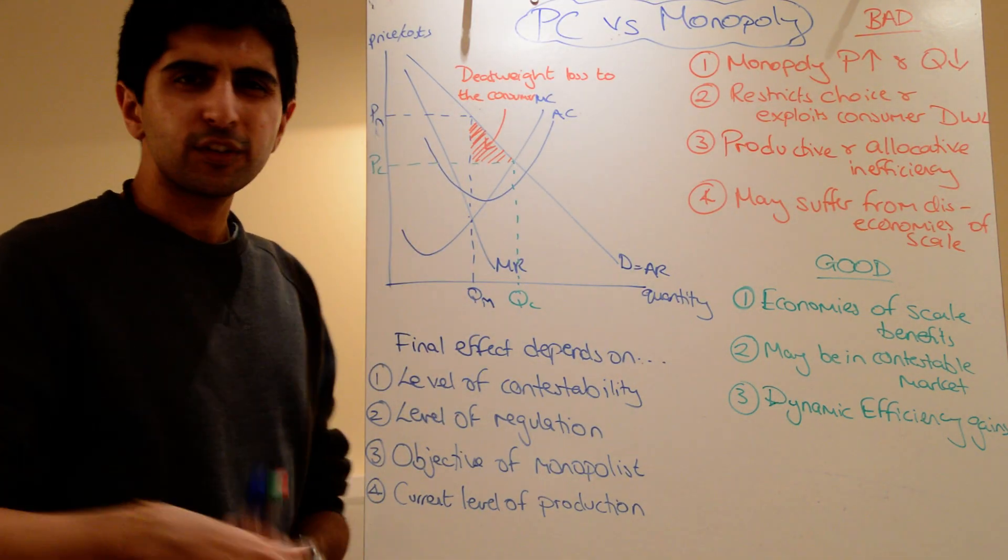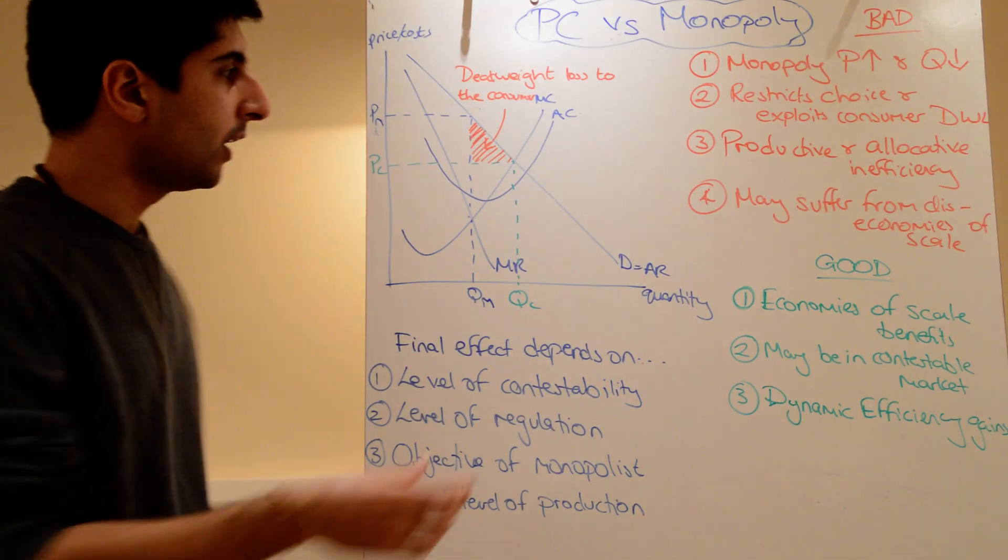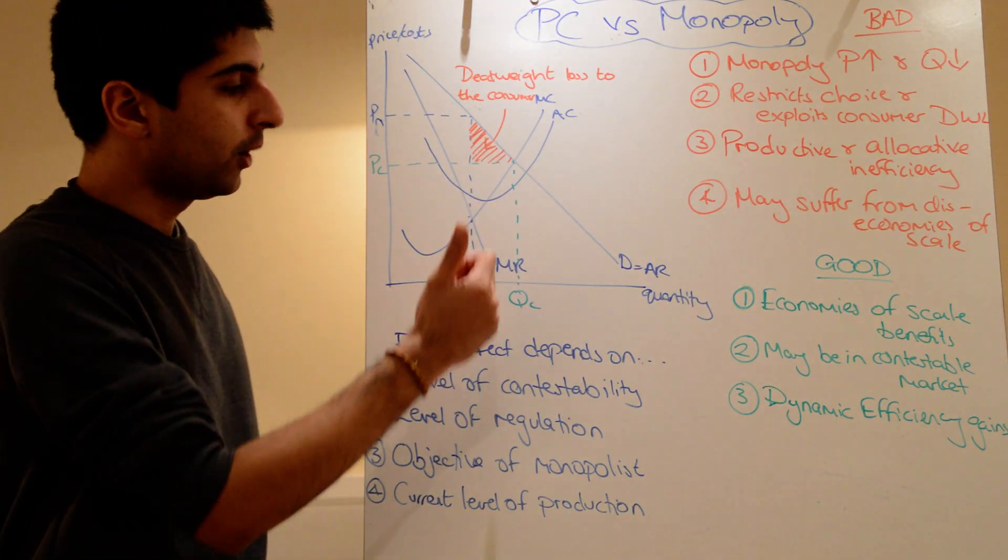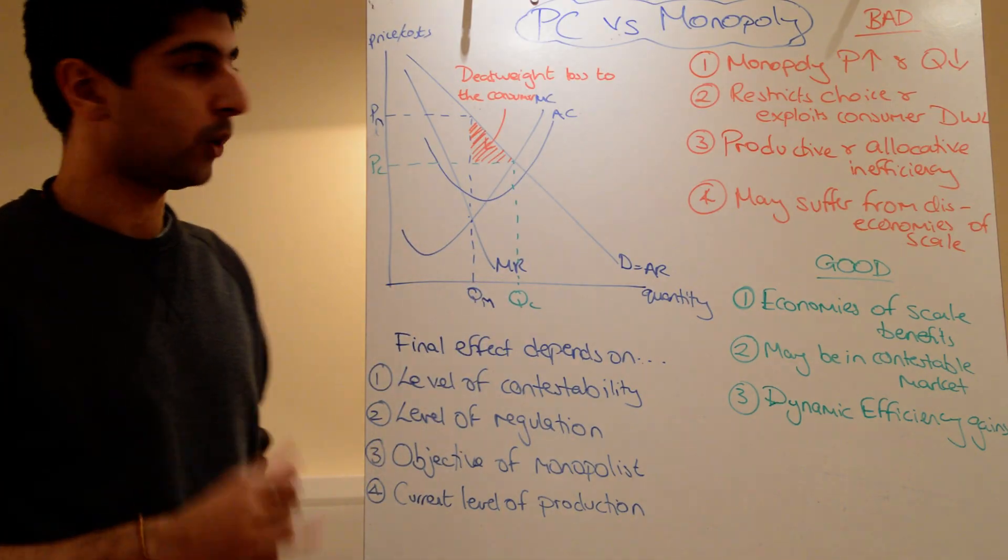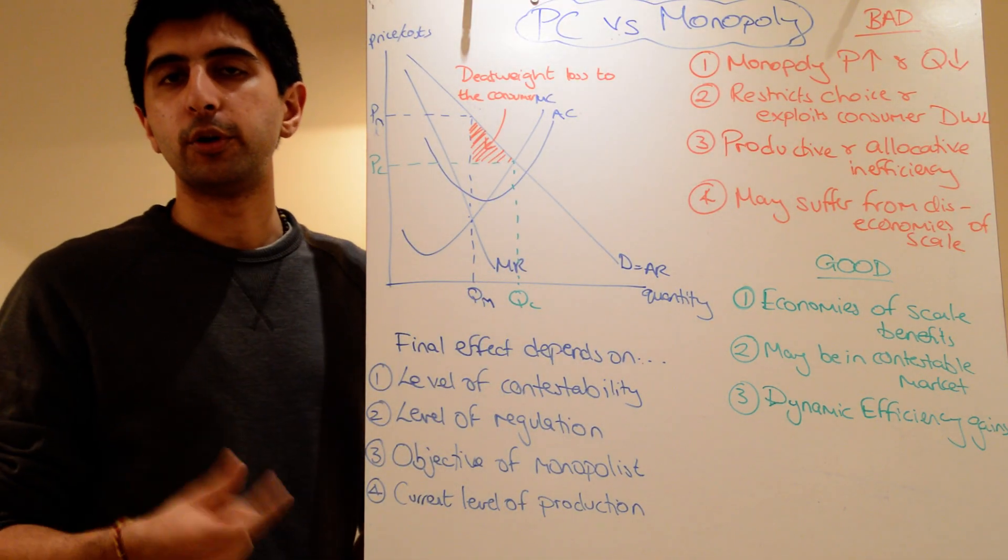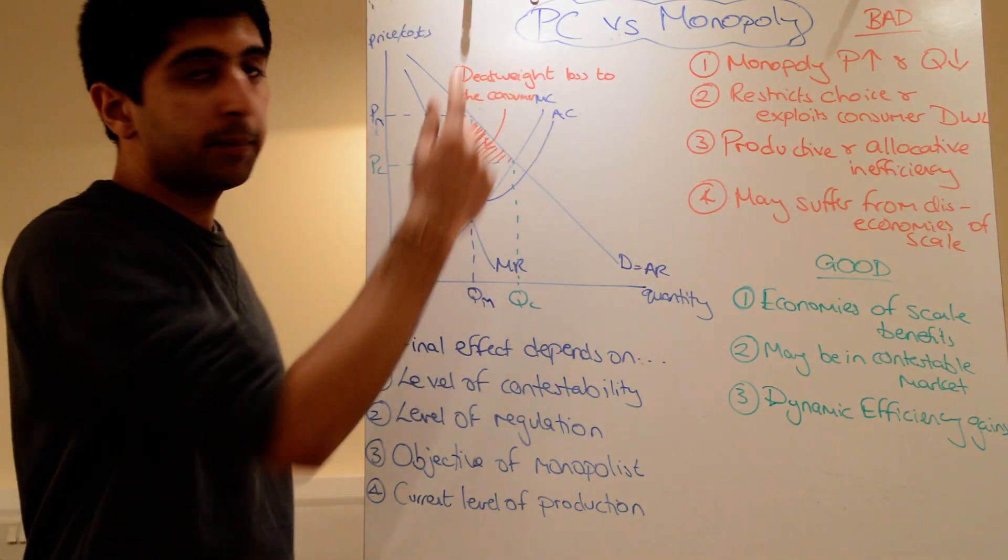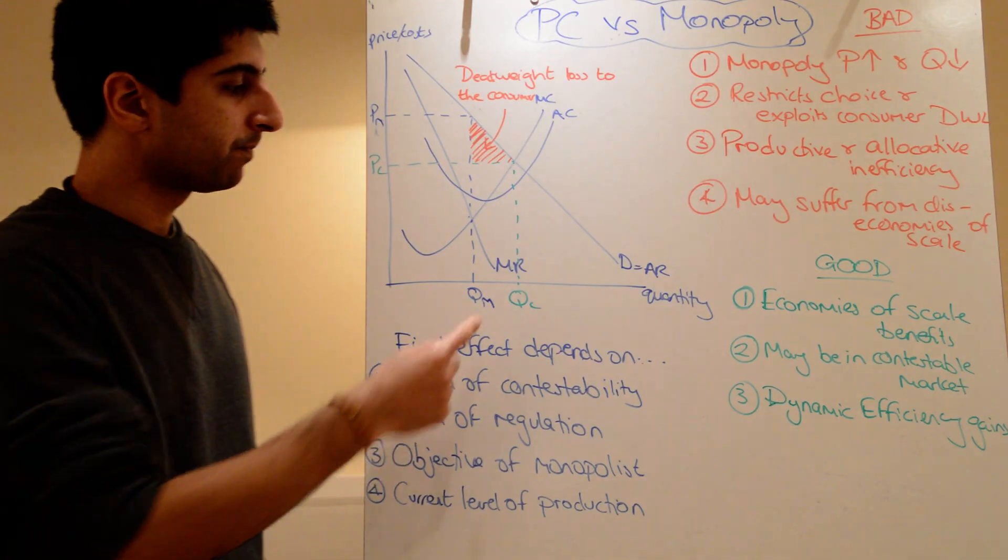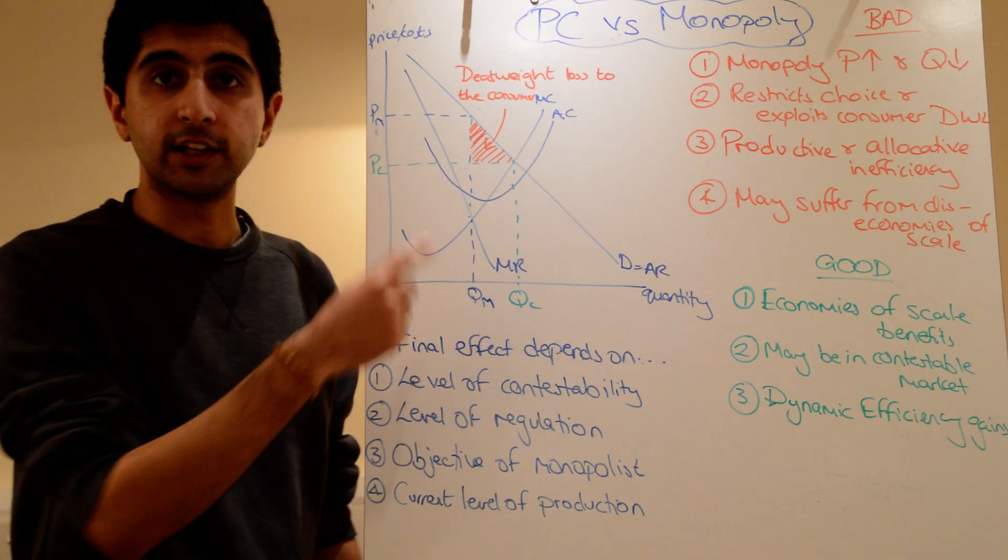What I've also done, just for comparison purposes, is to put on here the theoretical place where a perfectly competitive firm would produce and price as well, and that is at the allocatively efficient point. Remember, in the long run, perfectly competitive firms, their conduct is defined by allocative efficiency, and that's where that point is, the green QC and PC.